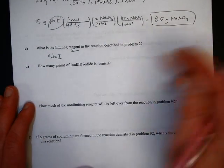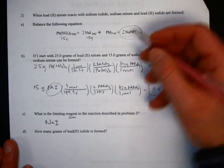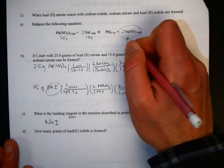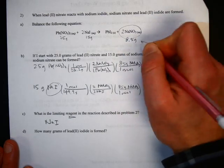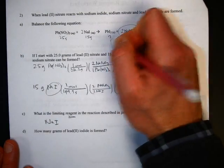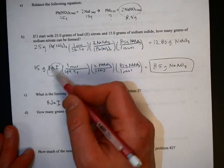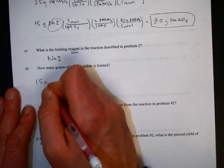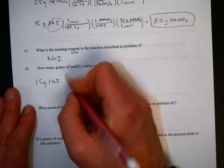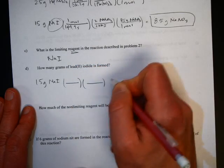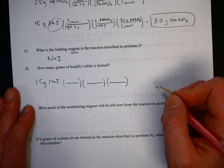How many grams of lead iodide are formed? Well, you can figure that out. This is lead iodide right here. We know we formed eight and a half grams of this. Now the question is how much of this did we form. You have to do it twice though, because you know this one runs out first. So just use that 15 grams of sodium iodide and convert it to the lead iodide.